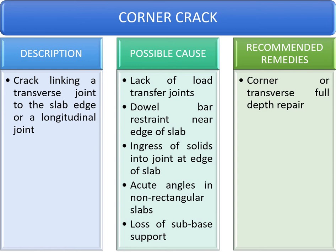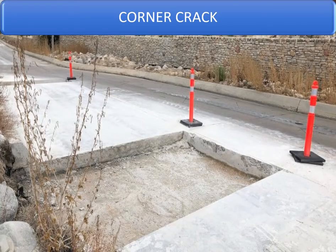To repair corner cracks, a transverse or full depth repair is required — the complete panel where cracking has occurred needs to be removed. Dowel bars and tie bars are inserted at suitable positions before laying the concrete. One important precaution: after removing the cracked slab, the base needs to be recompacted using small vibrators, and then with light sprinkling of water the concrete can be laid.